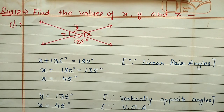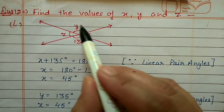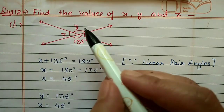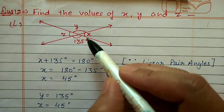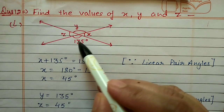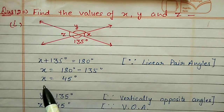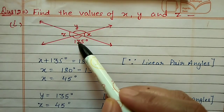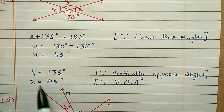Question number twelve, first part: two lines intersect, with one angle given as 135 degrees. Find x, y, and z. Using linear pair: x + 135 = 180, so x = 45 degrees. Using vertically opposite angles: y = 135 degrees, and z = x = 45 degrees.